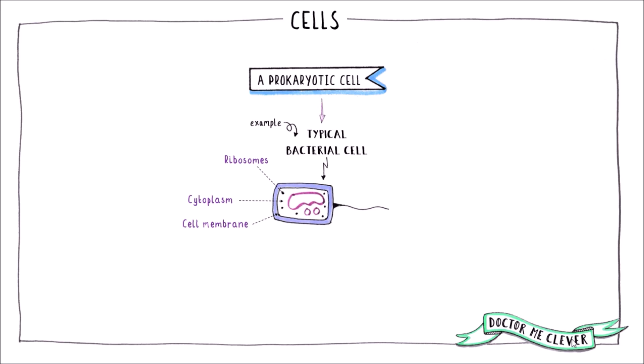There are several subcellular structures that are unique to bacterial cells. The circular chromosomal DNA that is free in the cytoplasm. This DNA contains the bulk of the genetic information that the cell needs to control its activities.